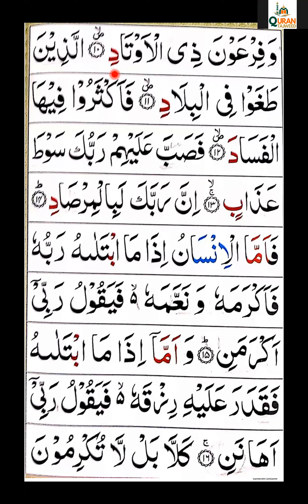اَوْتَادِ — اور ہم ٹھہریں گے آیت پر، تو دال سے زیر ہٹا کر دال کو سکون دے دیں گے، دال ساکن ہوجائے گی۔ اور آپ کو پتہ ہے جب دال ساکن ہوجاتی ہے تو وہ حروف قلقلہ میں سے ہوجاتی ہے، تو وہاں پر قلقلہ ہوتا ہے، دال کی آواز کو بند نہیں کریں گے، دال کی آواز واپس لوٹ کر آئے گی — اَوْتَاد (قلقلہ)۔ پوری آیت: وَفِرْعَوْنَ ذِي الْأَوْتَادْ۔